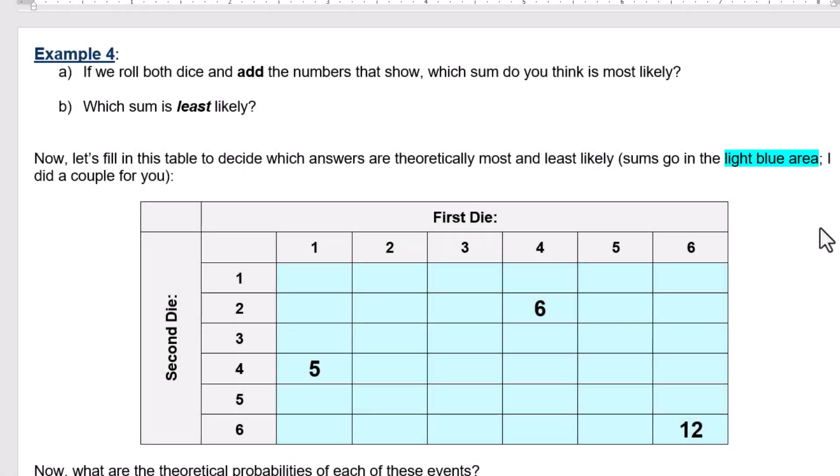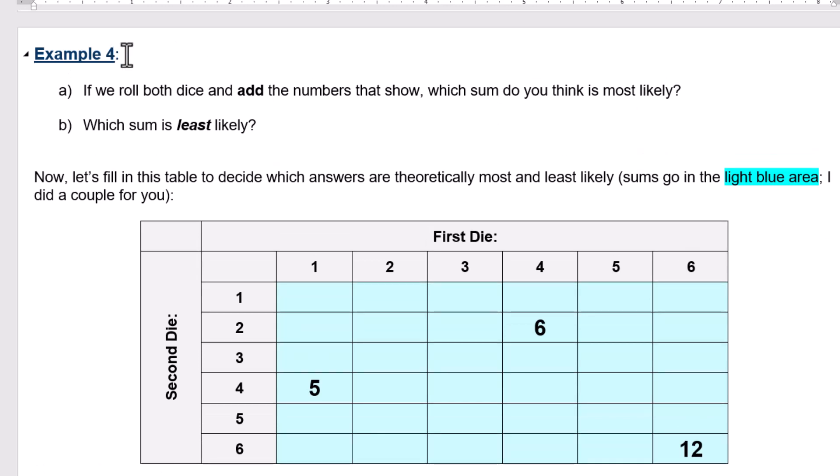Okay, my friends, so here we are rolling two dice. This is kind of fun and we are adding together the numbers that we get. All right, what sum do you think is most likely, least likely? Your choice on that. We're going to figure it out here in a second. Let's fill in this table to decide which answers are theoretically most and least likely.